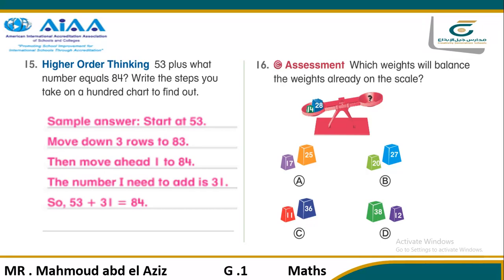Which way will make the problem easier to solve? We have 14 plus 28. Look at letter A: 28 is changed to 25, so we take 3 from 28. And 14 becomes 17, because we add that 3 to 14. So we take 3 from 28 and put it to 14, giving us 17 plus 25. Letter A is 17 plus 25.